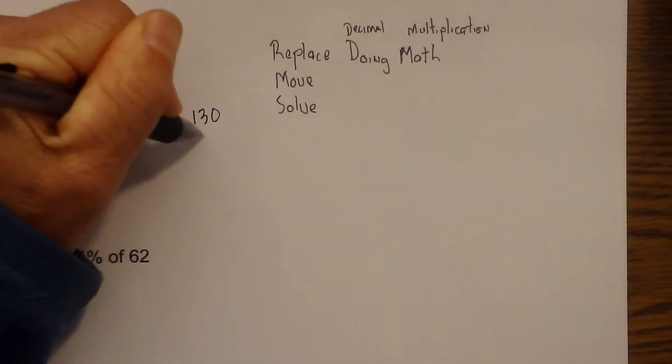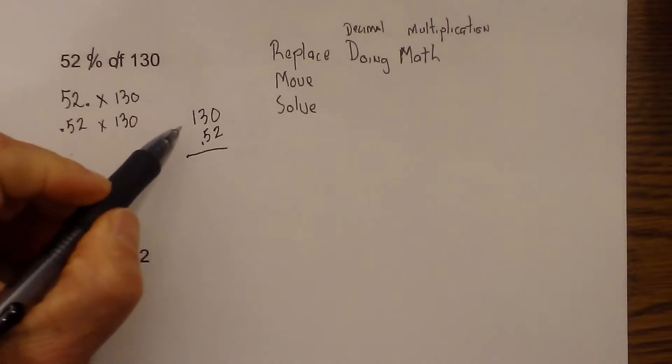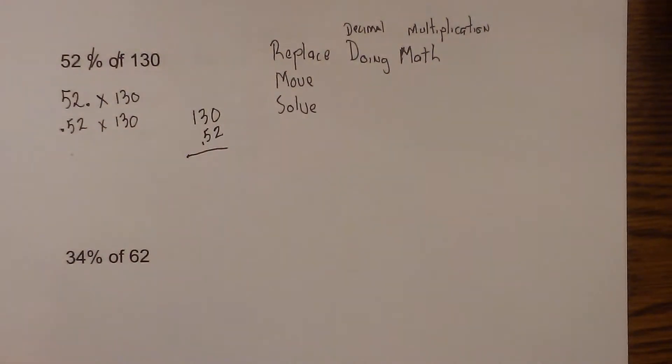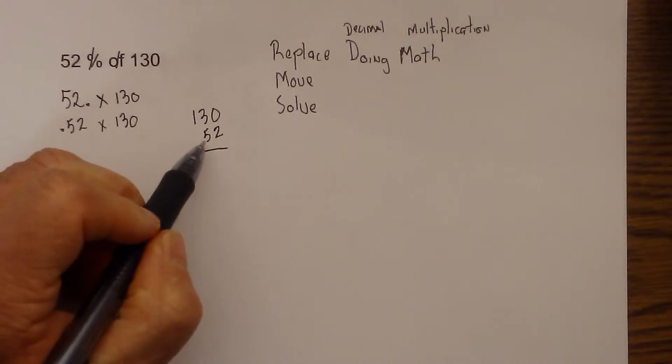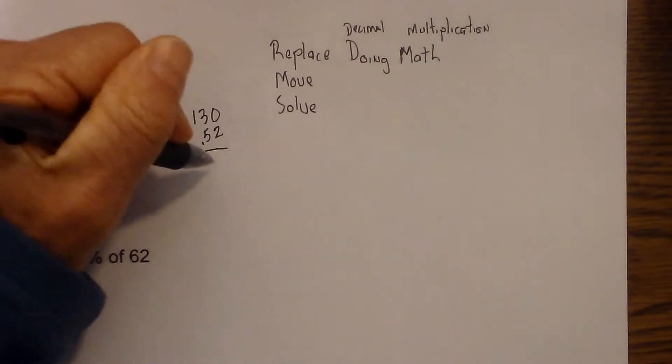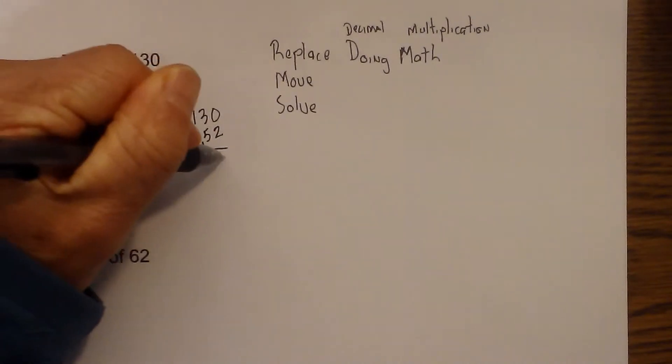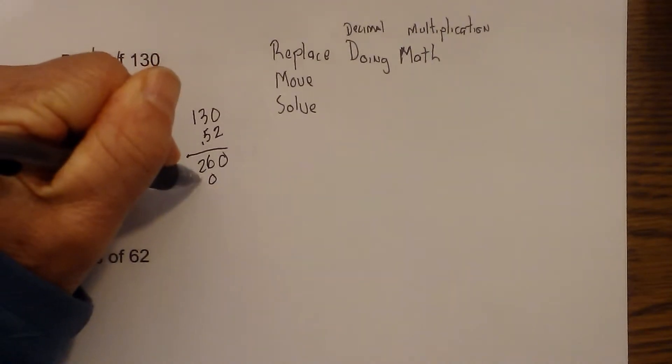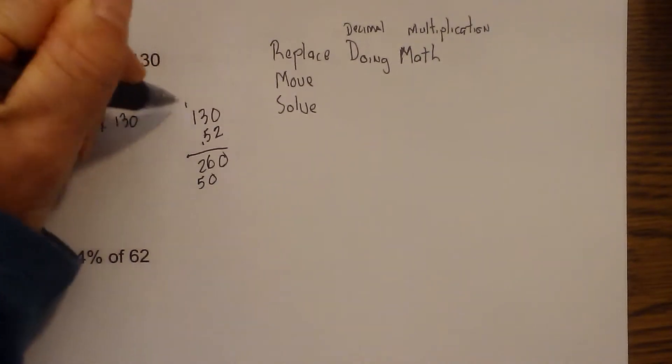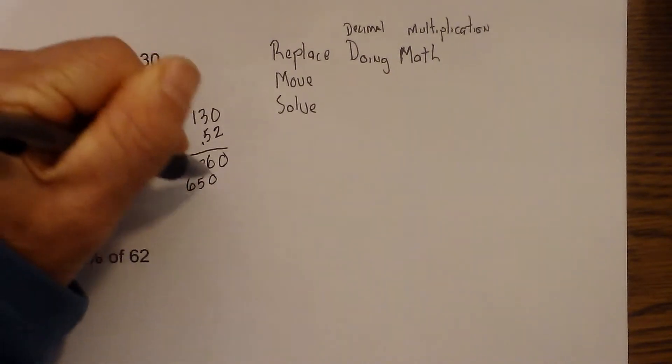And I'm going to rewrite this to solve. So we now have 130 times .52. What I like to do when I multiply a decimal is I just act as if the decimal is not there. And then later I add in the number of places that's to the right of the decimal. So I'll show you what I mean. That is 0, 6, 2, 0, 15, carry the 1, 5, that becomes 6.